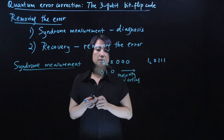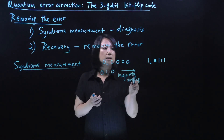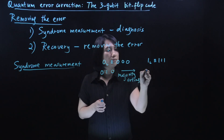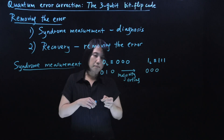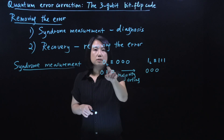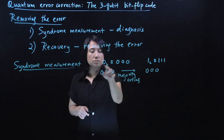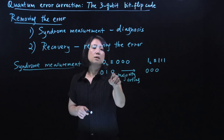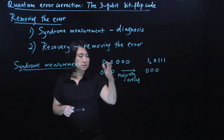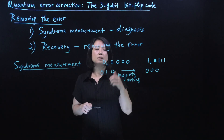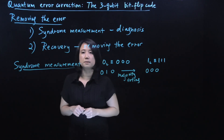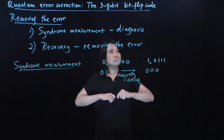Majority voting here tells you the state is mostly zero, so most likely it came from 000. You fix the error by going back to 000. Essentially, you read the code word you receive, interpret what error most probably occurred, and then fix it. In the quantum case, however, this doesn't work directly.